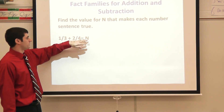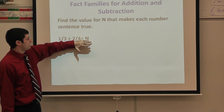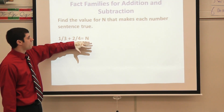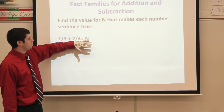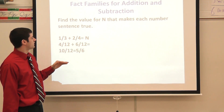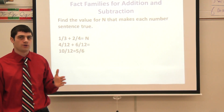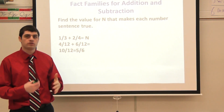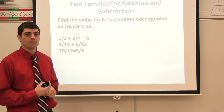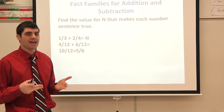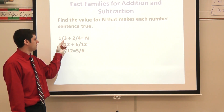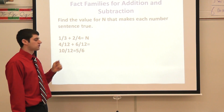Let's take a look at an example here. If I have the problem one third plus two fourths equals n, I have my two fractions that are added together and they're going to equal n. To solve this problem, we're going to use our background knowledge from earlier on adding fractions. When we add fractions, you have to have common denominators. The least common denominator between three and four is 12.